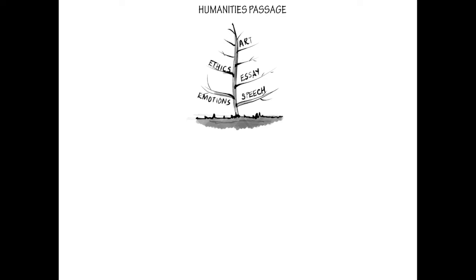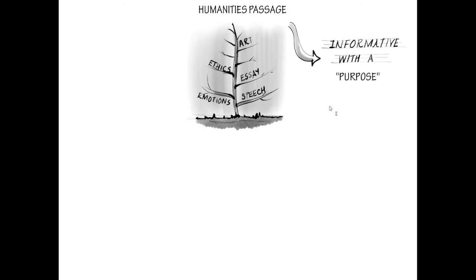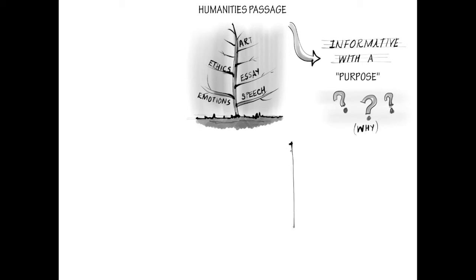The humanities passages can best be described as informative with a purpose. Having a purpose does not necessarily mean that there's a bias, though a bias is possible. The purpose of the passage could be to describe a concept in order to build to a conclusion. So no matter what, your job is to determine the purpose of the passage — why did the author write this?